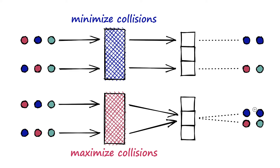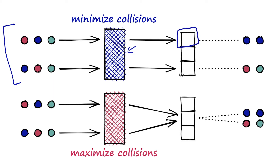Let's quickly recap what LSH is. At the top here we have a hash function — the blue part in the middle — and vectors on the left passing through it. A standard hash function minimizes collisions, putting vectors into separate buckets. LSH does the opposite: it maximizes collisions, but only for similar vectors, not everything. In short, LSH is a hashing function that tries to bucket similar vectors together.